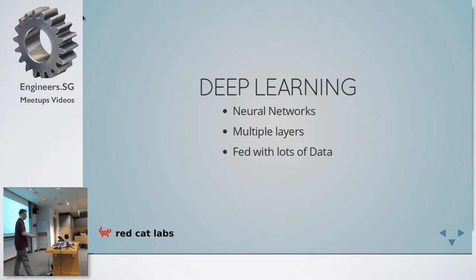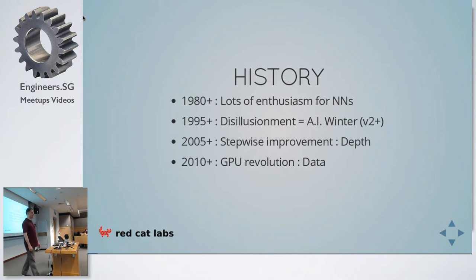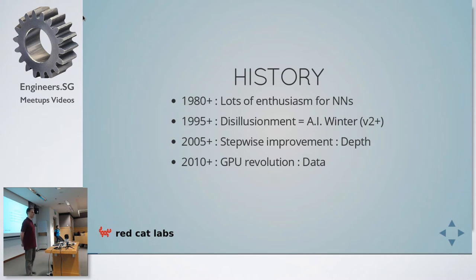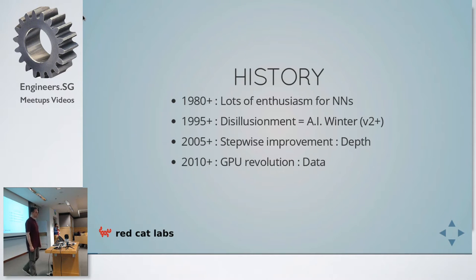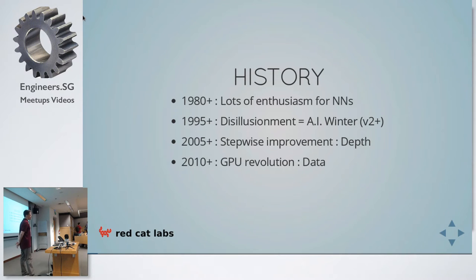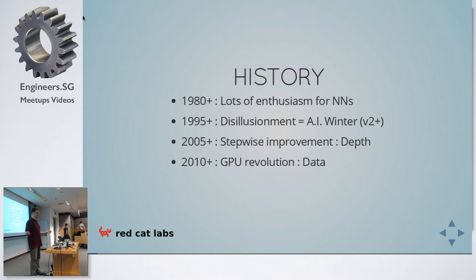Deep learning — basically what we're talking about is neural networks with multiple layers, regularly fed with lots of data. History-wise, this has been around for a long, long time. In the 80s, people thought this was one of the answers to the whole brain thing, that we're going to map the brain and have AI any time now. But what happened in the mid-90s is that people discovered it wasn't quite so easy, and had problems solving very simple toy examples — AI winter set in.